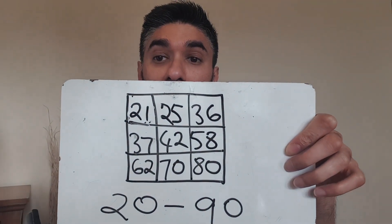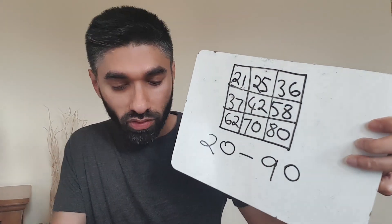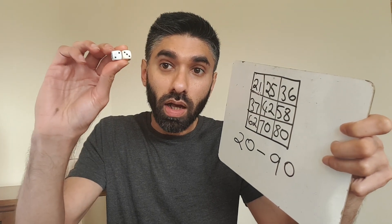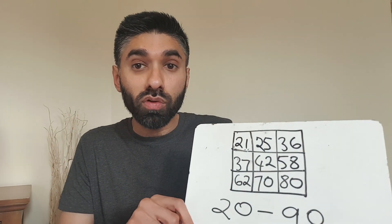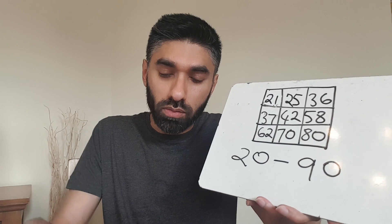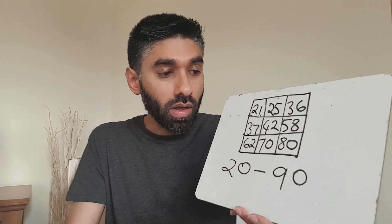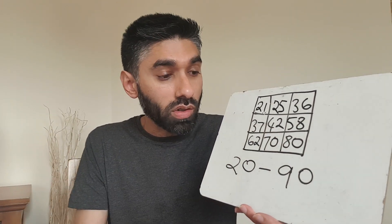Now the rule is I'm going to roll these two dice, call out the numbers, and you need to add the numbers up and cross out the multiple of that number from your grid. Multiples are numbers that appear on the times tables of that number. For example, if I roll four and six, that gives me 10 - cross out multiples of 10. If you have two multiples of 10 you can cross out both.